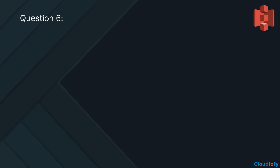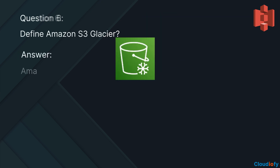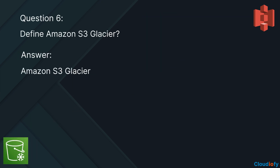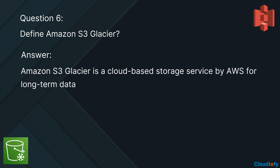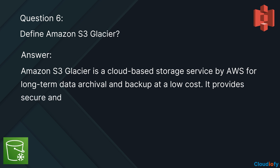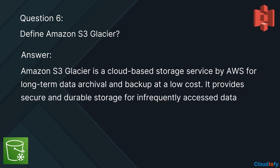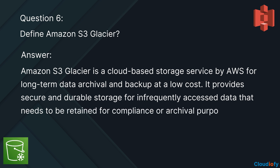The next question is: define Amazon S3 Glacier. Amazon S3 Glacier is a cloud-based storage service by AWS for long-term data archival and backup at a low cost. It provides secure and durable storage for infrequently accessed data that needs to be retained for compliance or archival purposes.